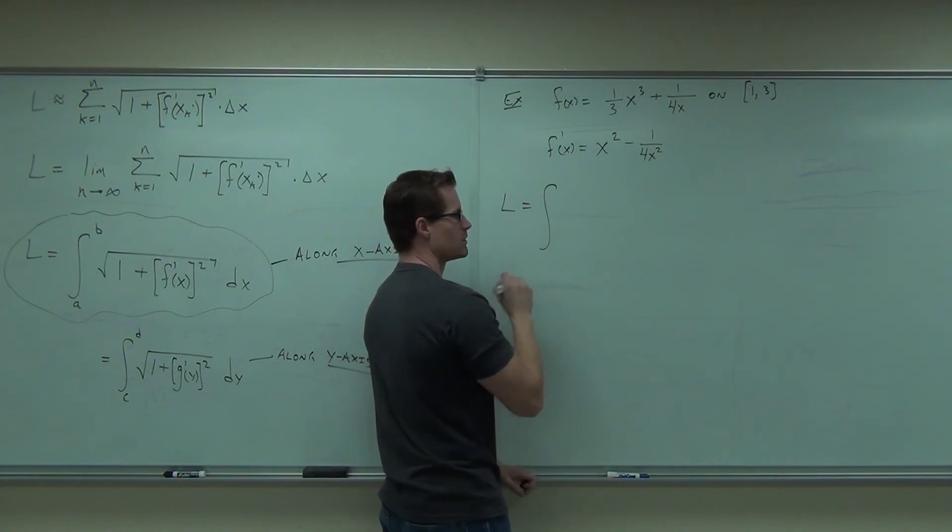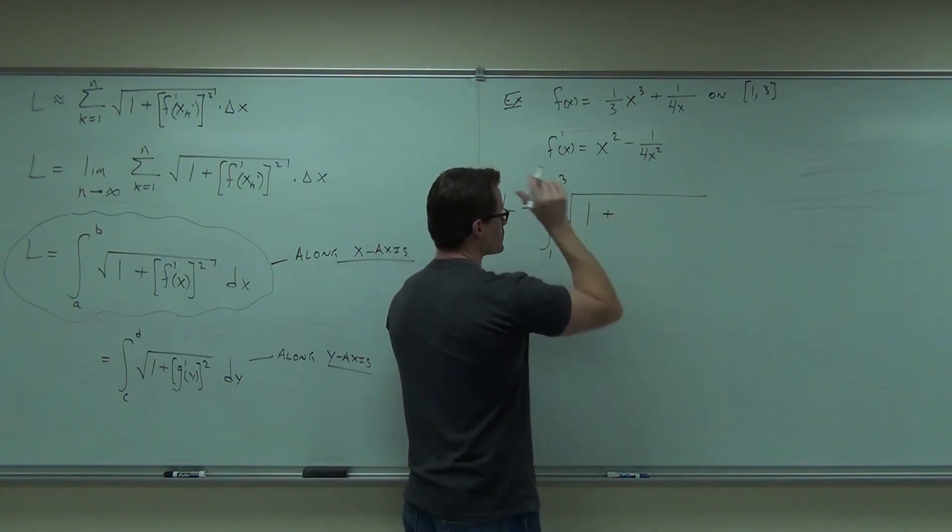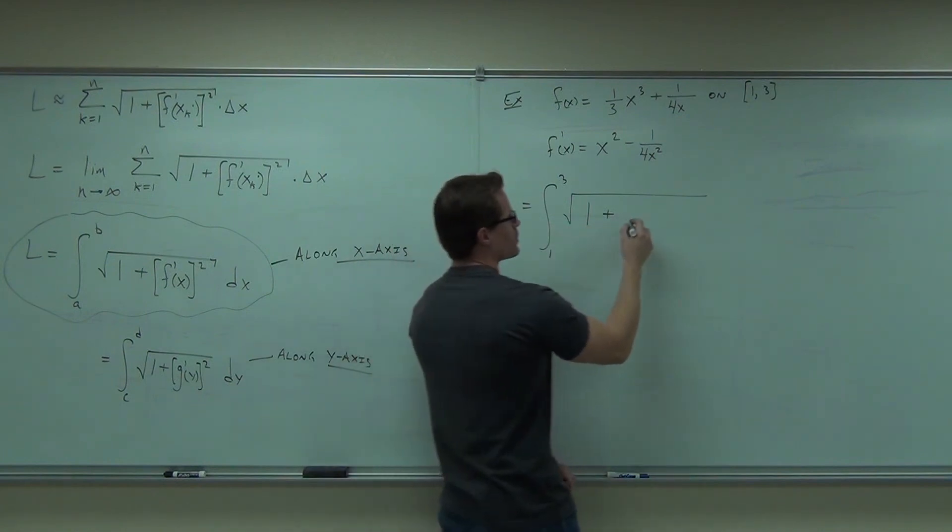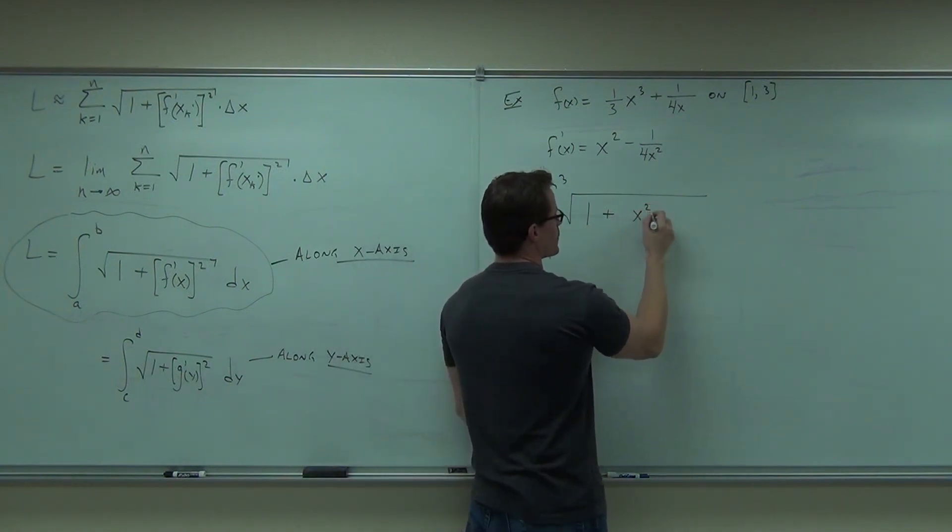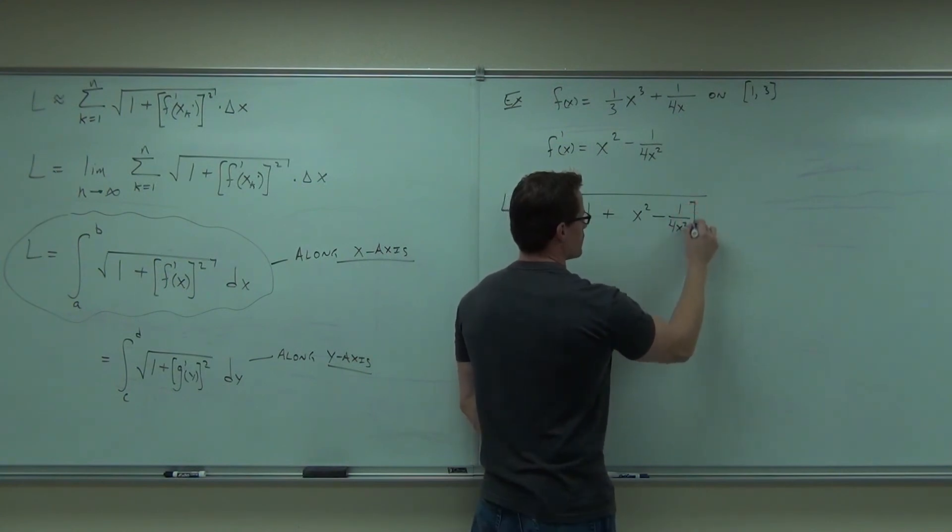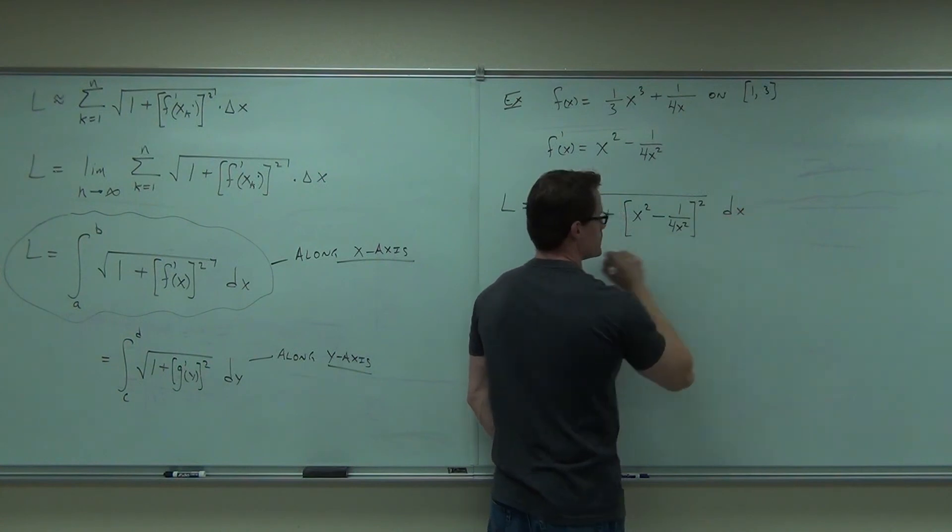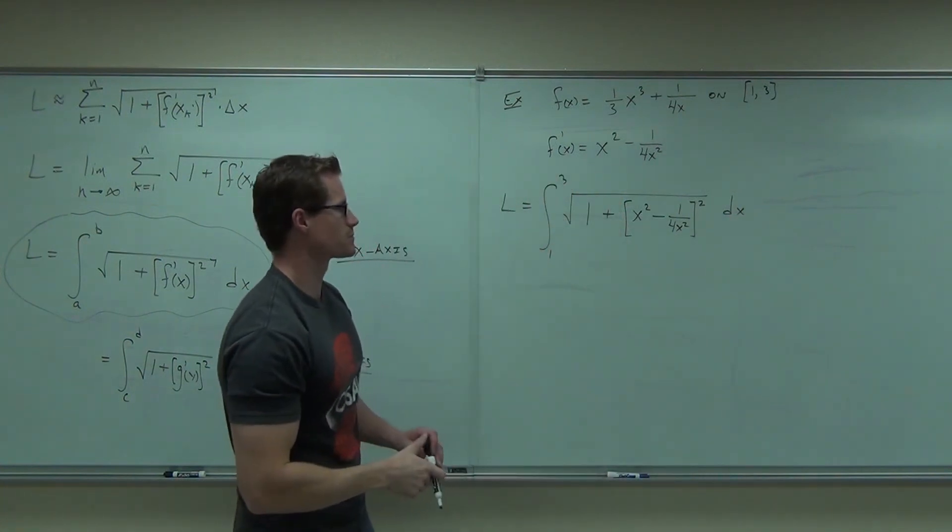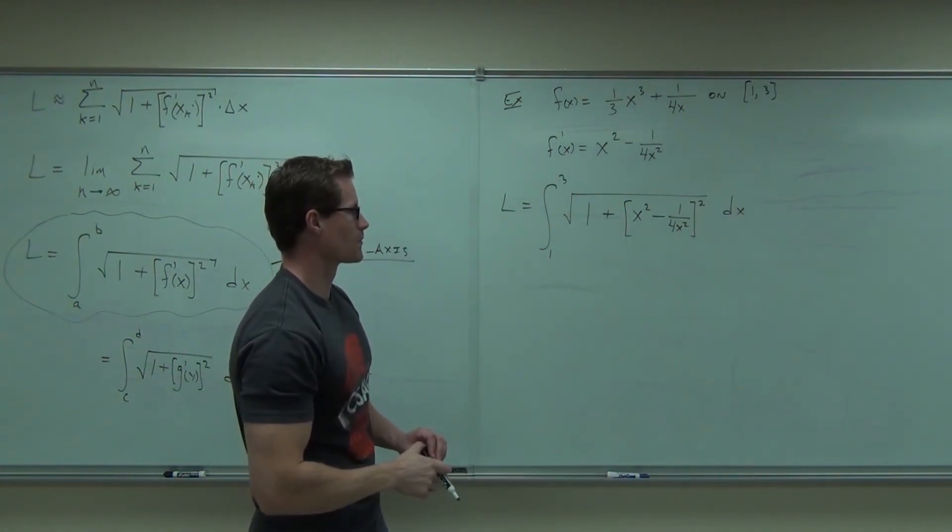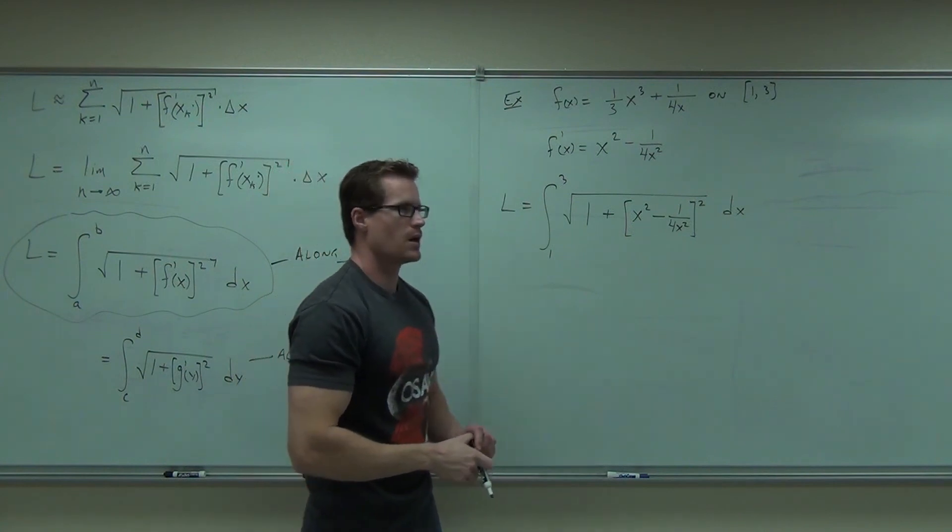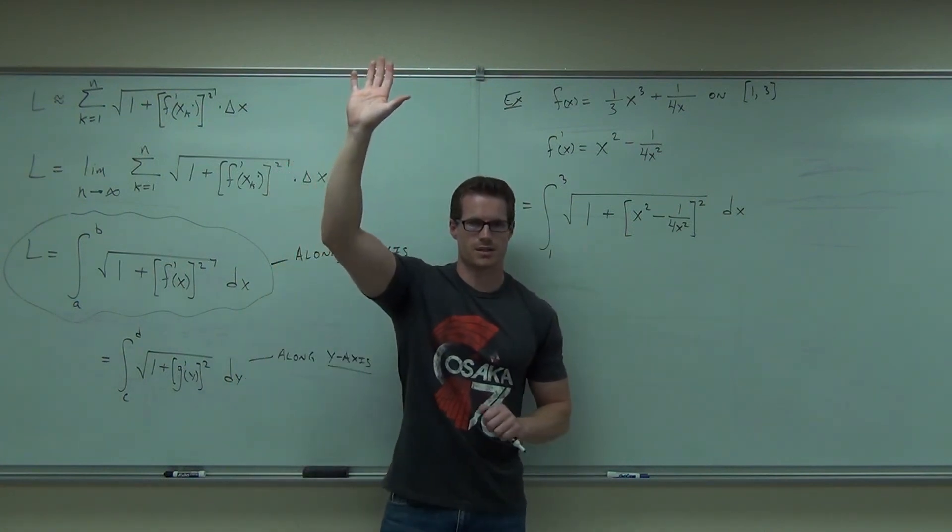If we set up our integral, where are we starting? One. Inside the integral, we're going to have a square root. We're going to have one plus. On the inside of that square root, you're going to have x squared minus one over four x squared squared dx. How many of you feel okay with the setup, at least?